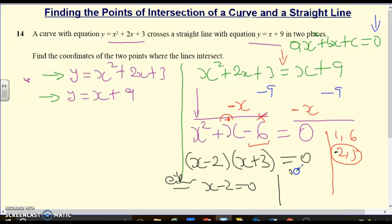x plus 3 is 0 because one of them has to be 0 for the product to be 0. So, this simplifies to x equals 2 or x equals negative 3.